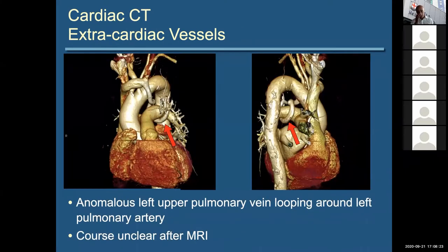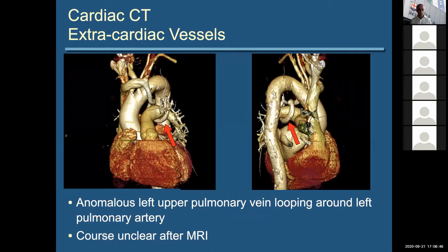Where CT is really preferred is for looking at straight anatomy, particularly vascular anatomy. Here's a patient where the left upper pulmonary vein was difficult to follow on MRI, but on CT you can see quite nicely that it's doing a 360-degree loop around the left pulmonary artery before ascending and draining anomalously into the innominate vein. CT becomes a fantastic tool for working out what's connected to what, which is why I'll use it for a lot of this talk.